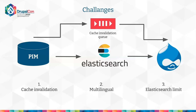The second challenge is multilingual — multilingual products or multilingual attributes. How External Entities is currently designed means multilingual support is not the same as one would have with Drupal core, so some additional work is needed to solve this issue. The third challenge is limits introduced by Elasticsearch itself. For example, by default it is not possible to paginate through more than 10,000 results. You need to use the Scroll API, which would be necessary, for instance, if you want to build an XML sitemap for the products.